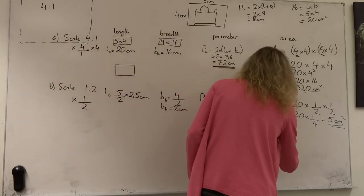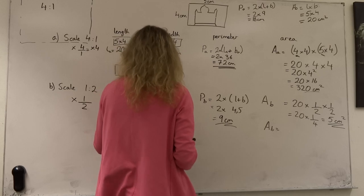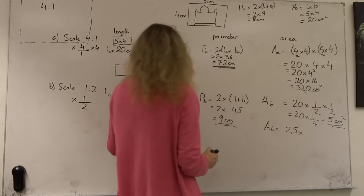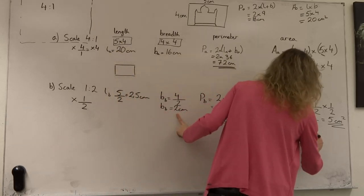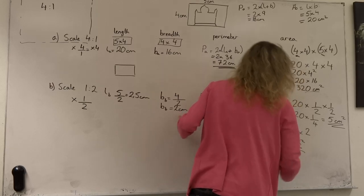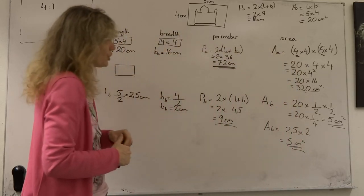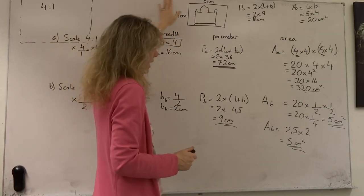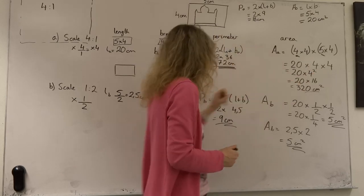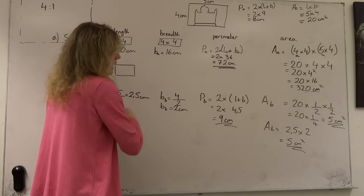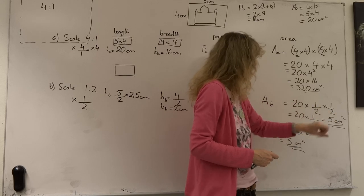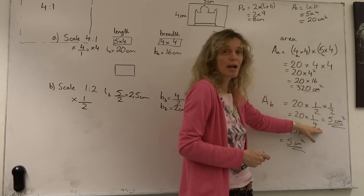Let's verify with the actual numbers. The area of new picture B is length times breadth, which is 2 and a half centimetres times 2 centimetres, which is 5 centimetres squared — exactly as expected. So when I increase the length by 4, I increase the area by 4 squared. When I decrease the length and breadth by a factor of a half, I decrease the area by a factor of a quarter.